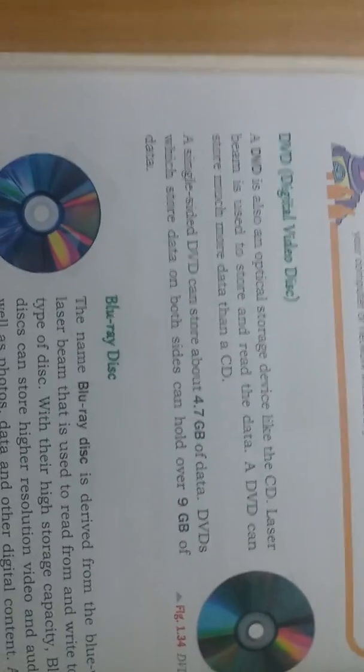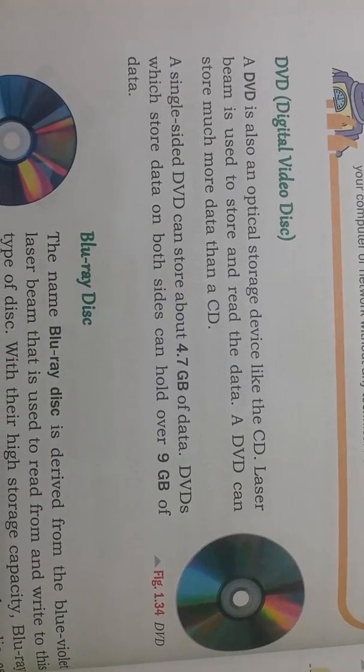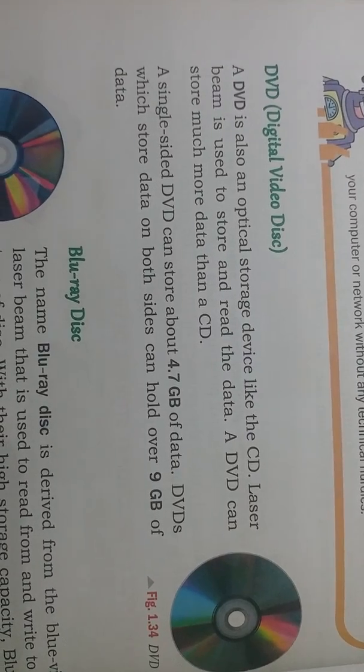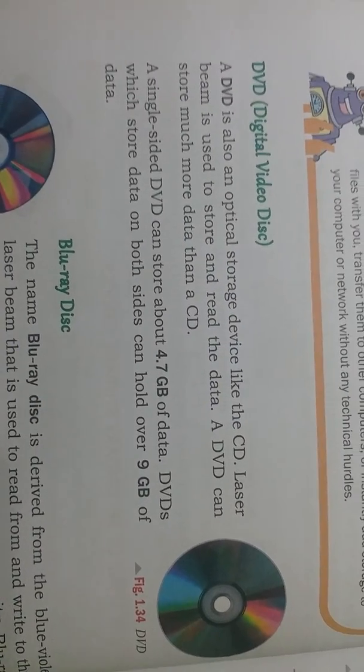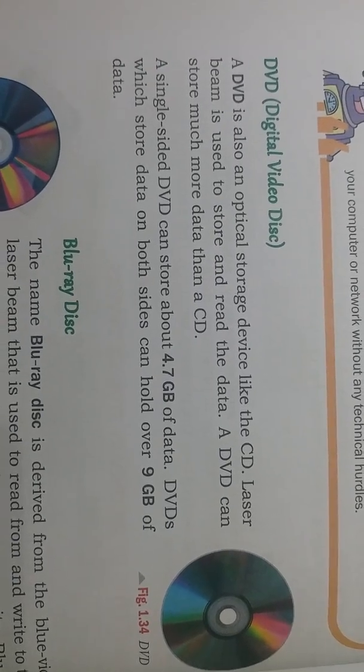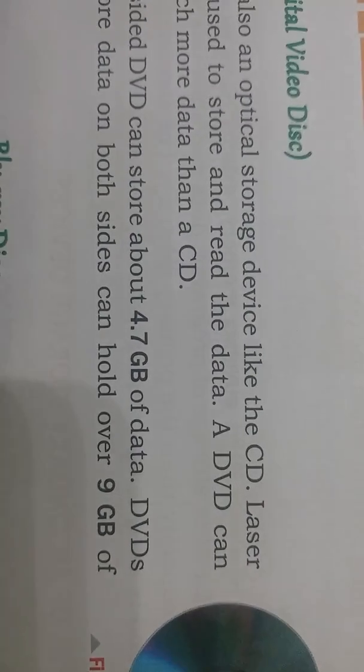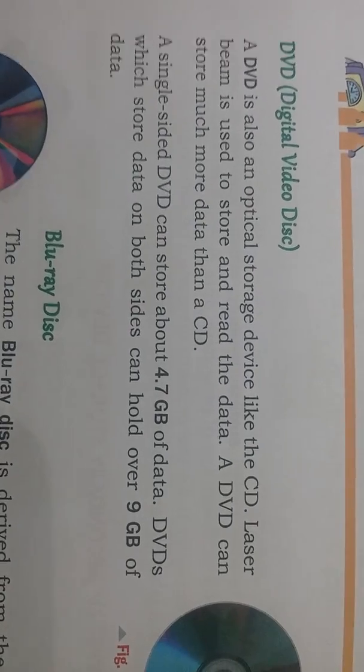DVD is also an optical storage device that uses a laser beam to store data. DVD can store more data than a CD — up to 4.7 GB on a one-sided DVD and up to 9 GB on a double-sided DVD. Blu-ray disc has even more capacity than DVD, storing up to 25 GB of data.